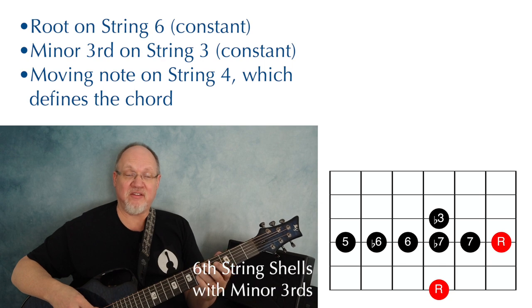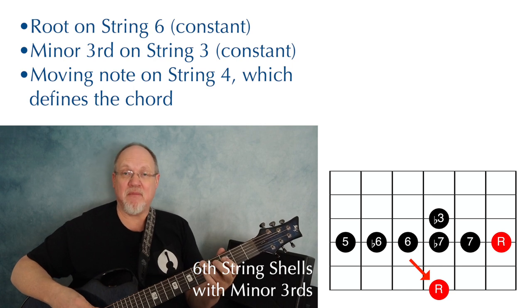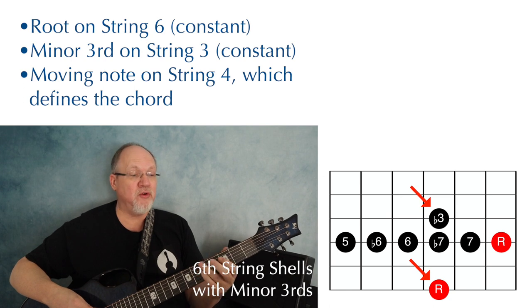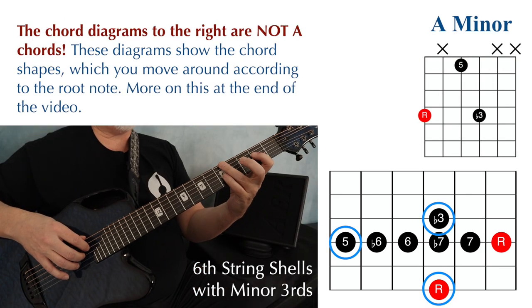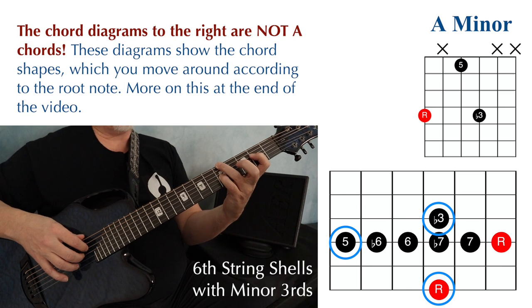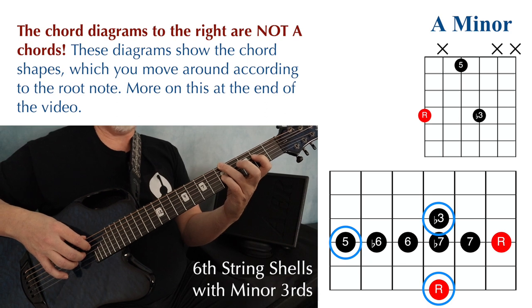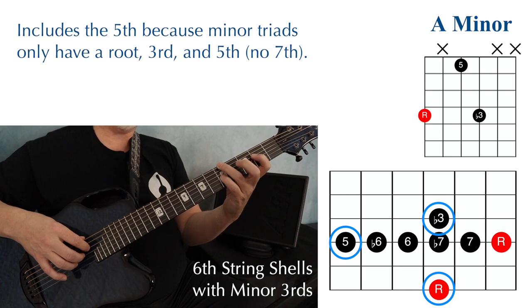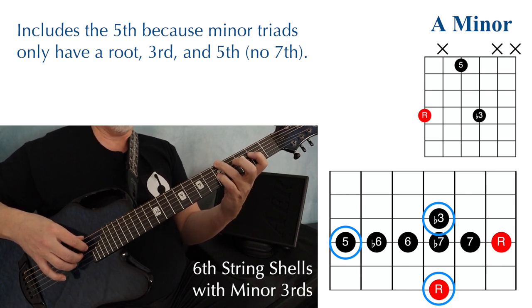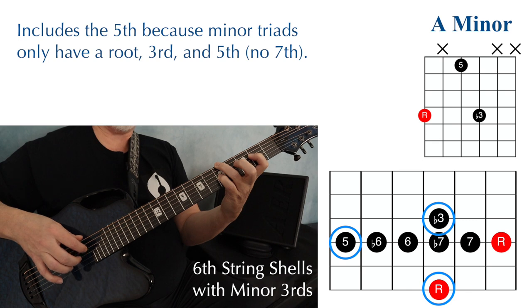This last series has the same root note on the sixth string, the fourth string notes move around, but this time we have a minor third — flat three — on the third string. The root and the flat three are constant; it's the note on the fourth string that completes the chord. Playing root-five-flat three gives an A minor chord, with the root on the A string at fret five. This chord includes the fifth because minor triads have roots, flat three, and five.